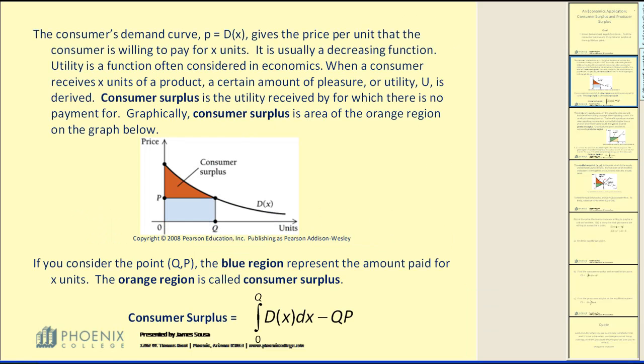The consumer's demand curve, p equals d of x, gives the price per unit that the consumer is willing to pay for x units. It is usually a decreasing function.